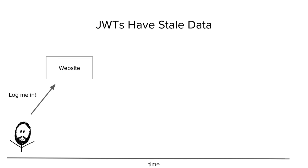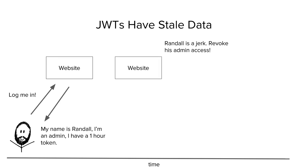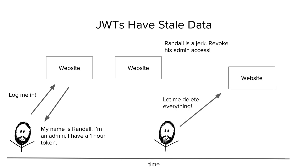I log in and have a token. At some point I start doing bad things, and the website administrator says, 'Randall's acting like a jerk, revoke all of his admin access.' The problem is I can still be a jerk, because if the web server is validating my JSON Web Tokens locally and not using a centralized cache, I'm still able to get away with things until my token expires. A lot of people don't really consider this effect when they're using these technologies.